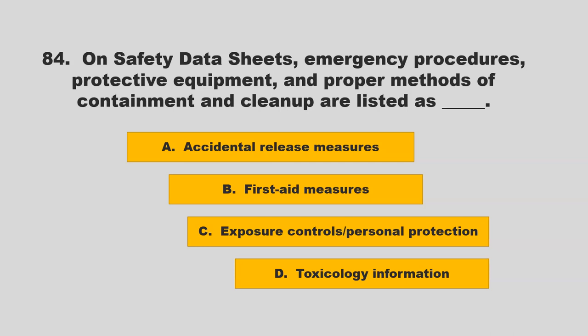On safety data sheets, emergency procedures, protective equipment, and proper methods of containment and cleanup are listed as blank. Options: accidental release measures, first aid measures, exposure controls/personal protection, or toxicology information. The correct answer is A: accidental release measures.